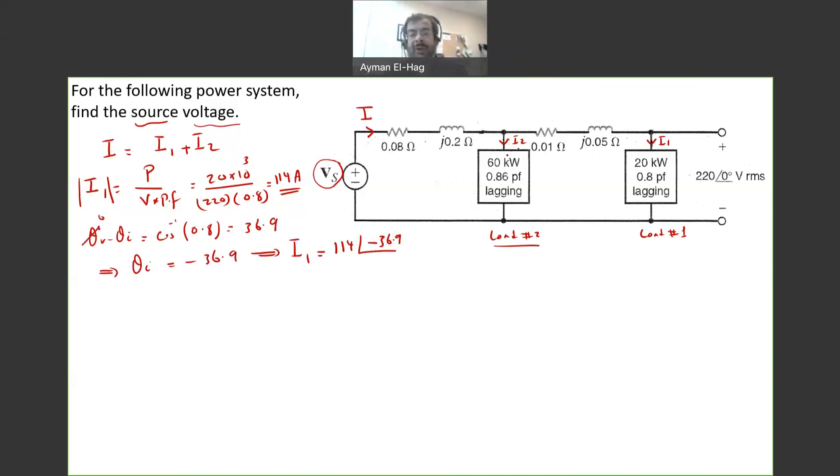Now we want to find I2. I2 is equal to P2 divided by V2 times power factor 2. Now, I know P2, I know the power factor of load 2, but I don't know the voltage, because this voltage is only across load number 1. Why is it not the same as load number 2? Because this impedance will have a voltage drop.